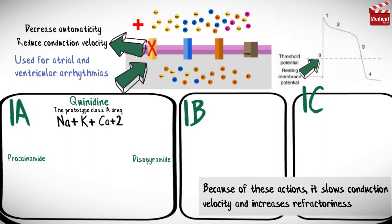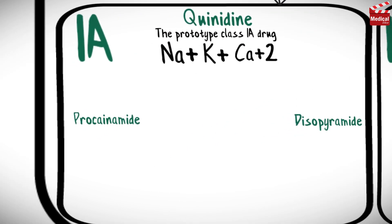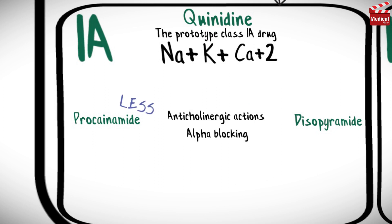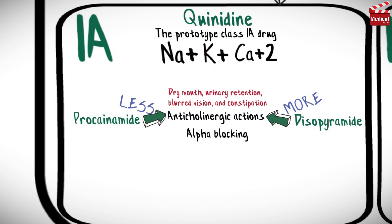Because of these actions, quinidine slows conduction velocity and increases the refractory period. It also has mild alpha-adrenergic blocking and anticholinergic actions. Procainamide and disopyramide have similar actions, however there is less anticholinergic activity with procainamide and more with disopyramide, and they may produce anticholinergic adverse effects such as dry mouth, urinary retention, blurred vision, and constipation.